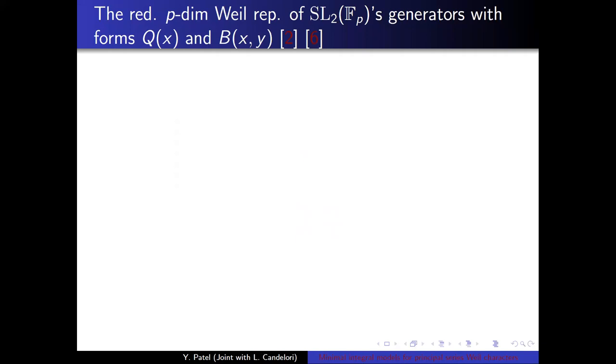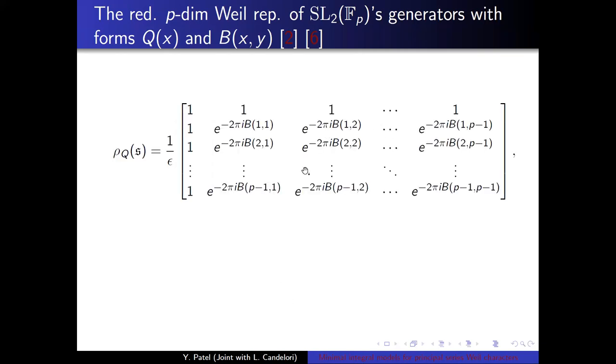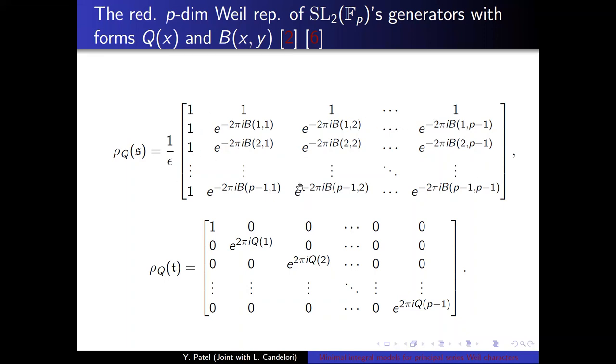So the irreducible p-dimensional Weil representation of SL2Fp's generators with a quadratic form Q and its bilinear form B is given by this expression for the generator mathfrac s and this expression for this matrix for mathfrac t. So this is where the discrete Fourier transform shows up. It's scaled, but this is a discrete Fourier transform and rho sub t is diagonal. We're going to exploit the diagonality of this representation later. In 1976, Alexander Knobs and Jurgen Wolfhard wrote two papers that constructed all of the irreducible representations of SL2 of z mod n z using the Weil representations.